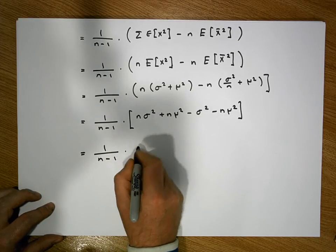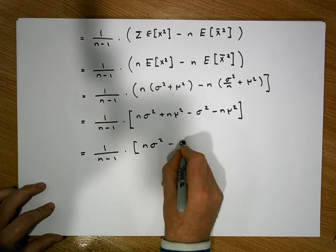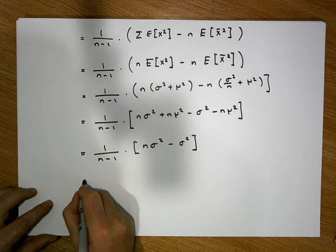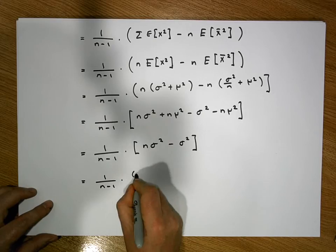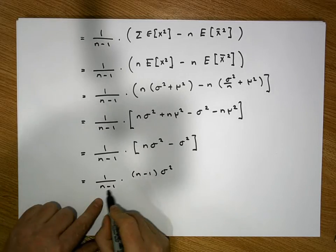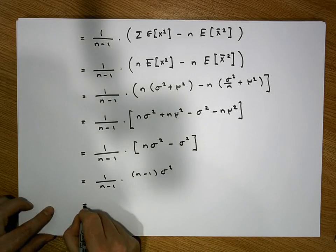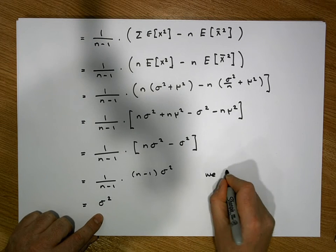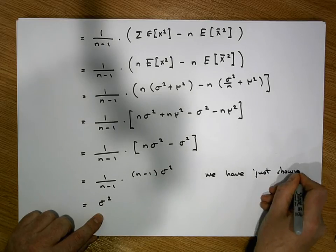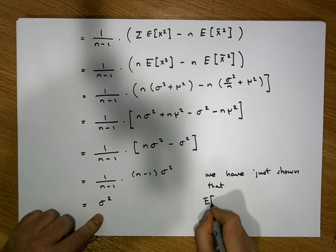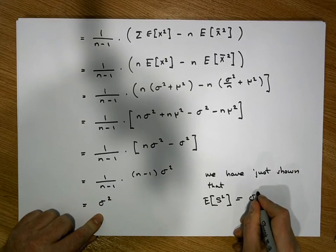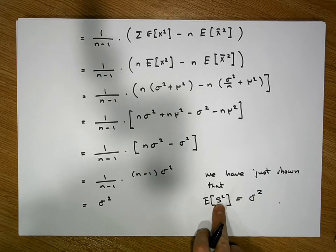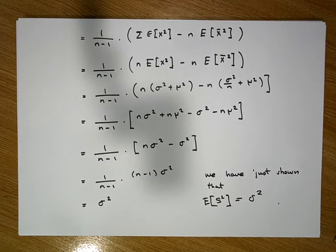We have n of these sigma squareds and take one away, leaving n minus 1 of them. So this is the same as 1 over n minus 1 times (n minus 1) sigma squared. The (n minus 1)s cancel, giving us sigma squared. That was a very long proof, but we have just shown that the expected value of the sample variance S squared is equal to sigma squared, which shows us that the sample variance is an unbiased estimator of the population variance.